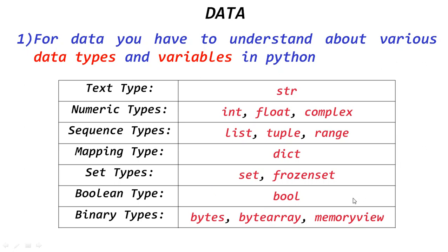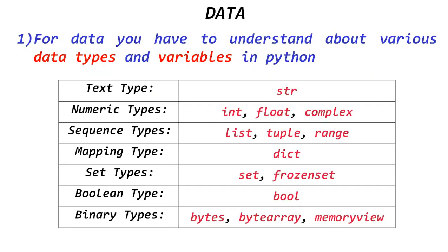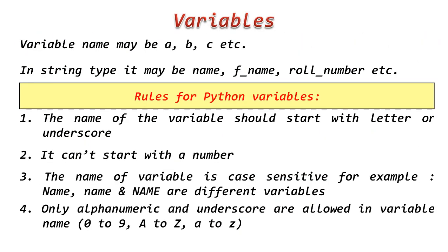I have already covered str, int, float, range, bool, and bytes. Some concepts are still pending: complex, list, tuple, dictionary, set, and frozenset — these are parts of Python data structure. Bytearray and memoryview are memory management constructs, also still pending. Then, regarding variables: a variable name may be a simple letter like a, b, c, or a descriptive name like 'name', 'f_name' for father's name, or 'role_number', using underscores.